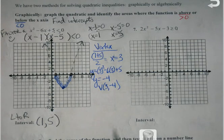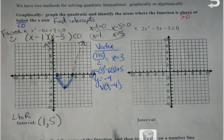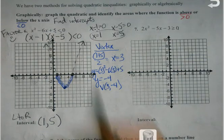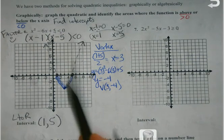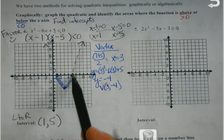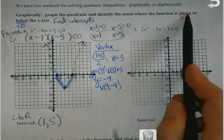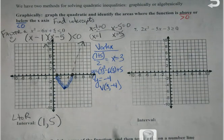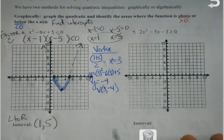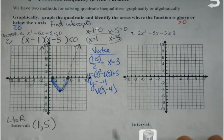I just let the graph help me figure out what those values are going to be. Can I get into bigger ones with union notation? Yes — we're going to see that on the second one. That's what I'm always doing: if it's less than, look at the area below the x-axis; if it's greater than, look at the area above.